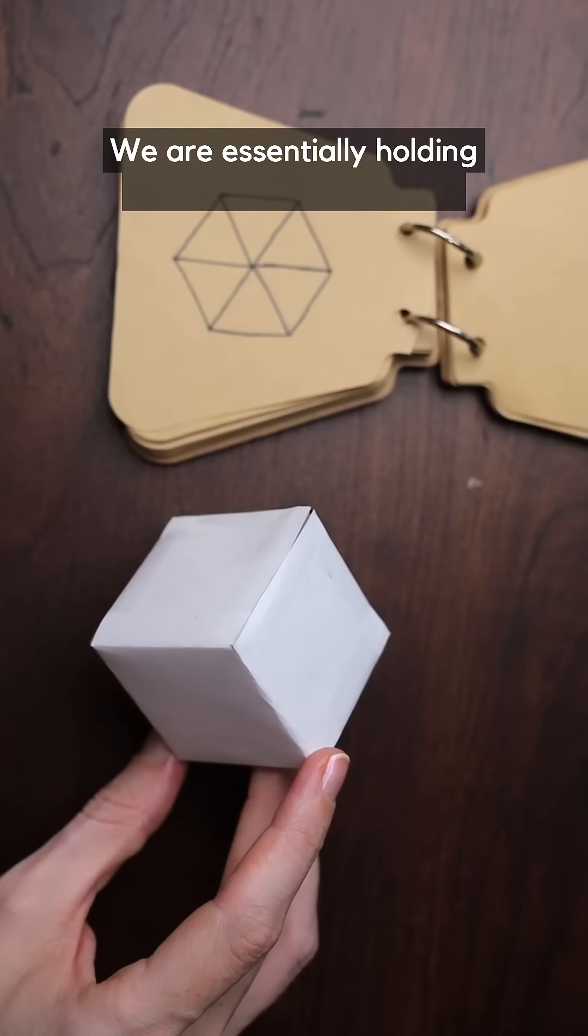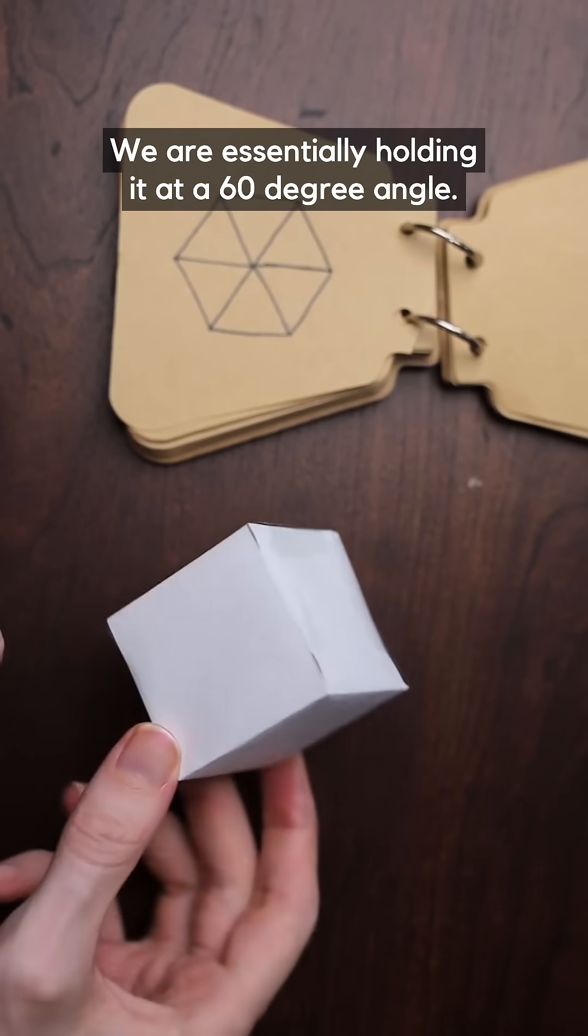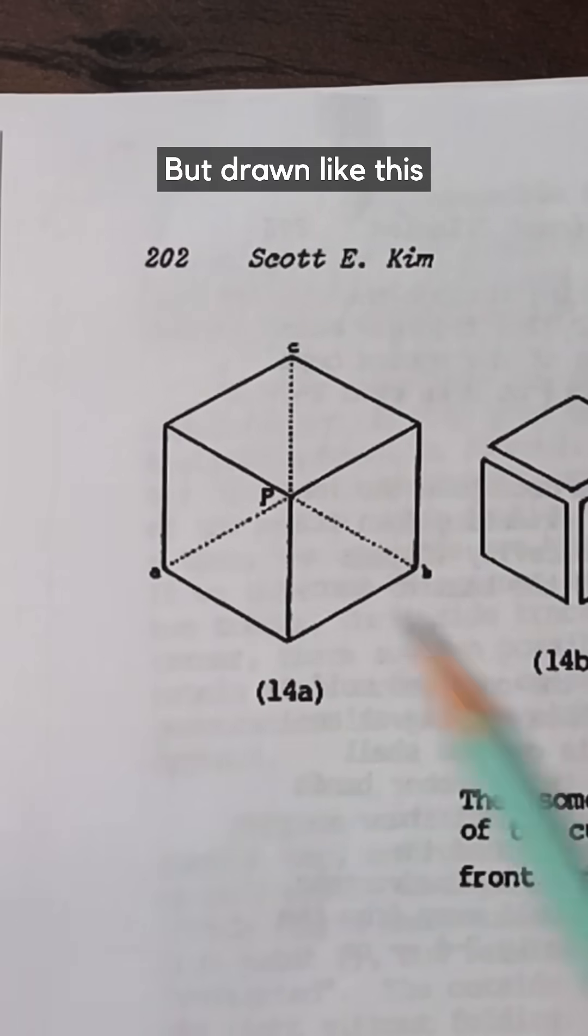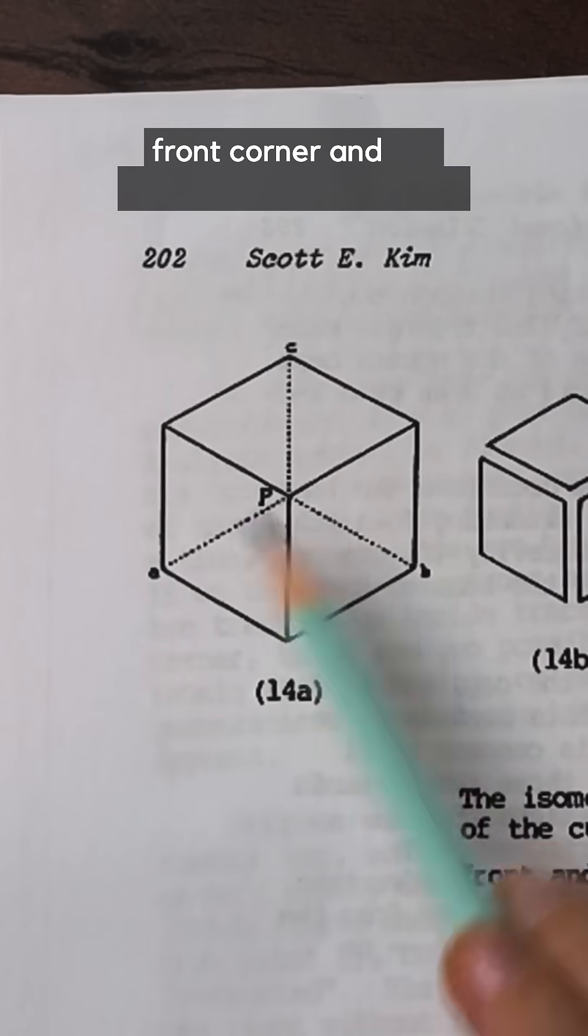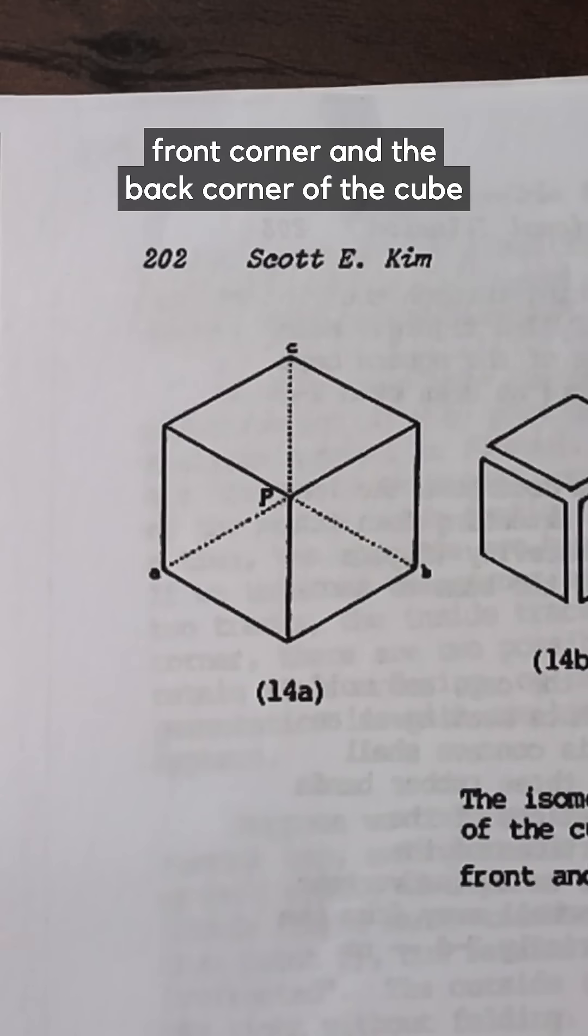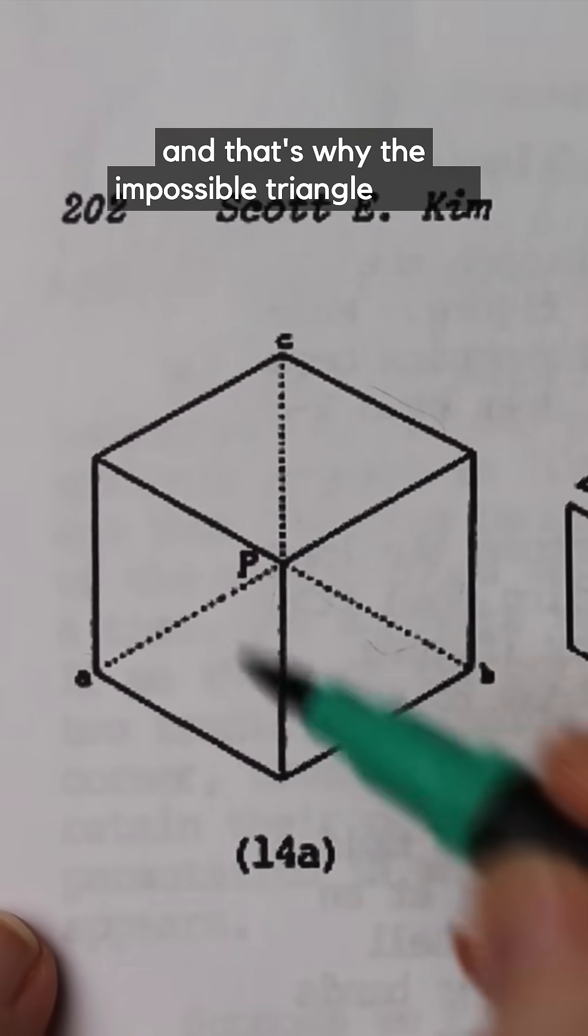We are essentially holding it at a 60 degree angle but drawn like this the central point represents both the front corner and the back corner of the cube and that's why the impossible triangle works.